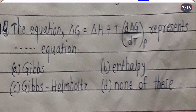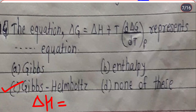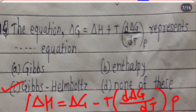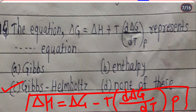Next question: the equation ΔG = ΔH + T(d(ΔG)/dT) at constant pressure P represents which equation? The correct option is C — it is the Gibbs-Helmholtz equation. This equation can also be represented as ΔH = ΔG − T(d(ΔG)/dT) at pressure P. Both forms represent the Gibbs-Helmholtz equation.